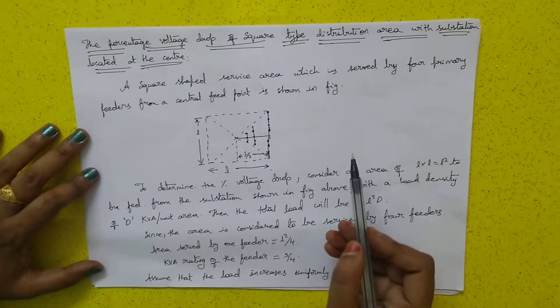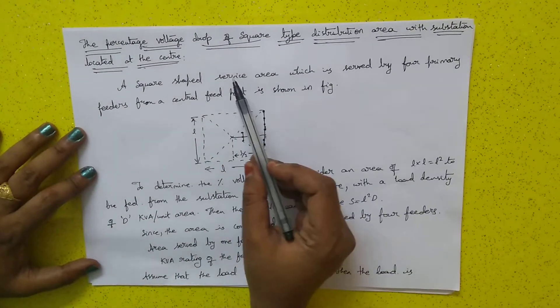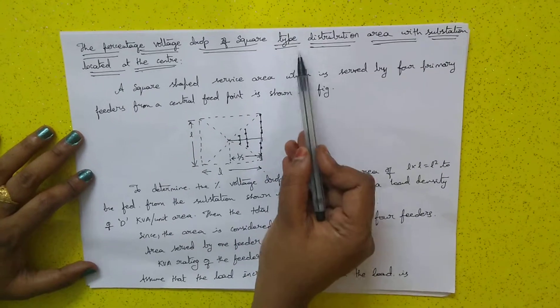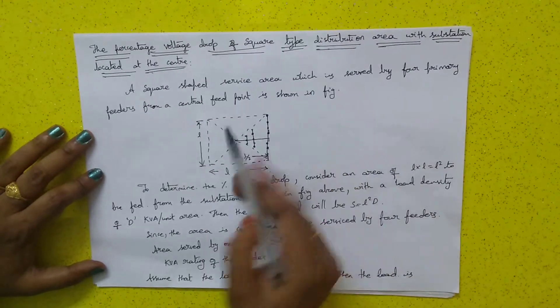Good morning, one and all. In electrical distribution, we are concentrating on the percentage voltage drop of square-type distribution area with substation located at the center.